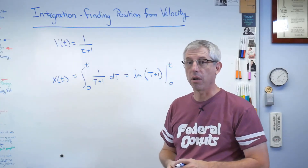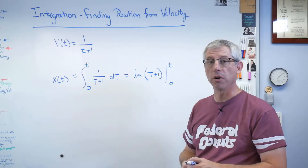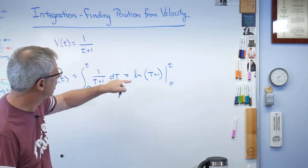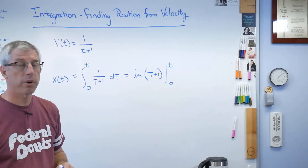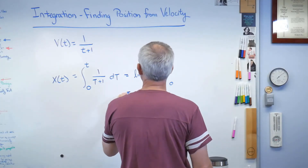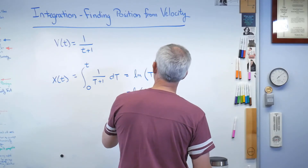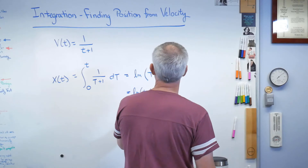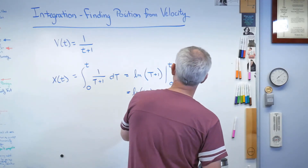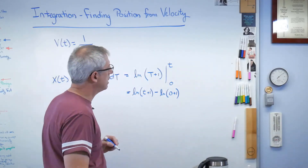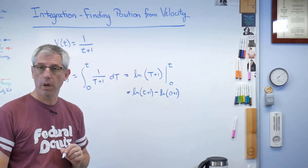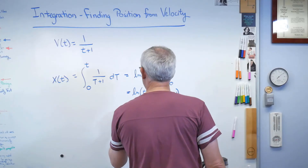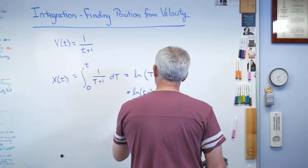That pretty much describes all of algebra, right? Just throw a letter in there where there's eventually going to be a number, and eventually we'll figure out what that number is. So let me get my head out of your way and apply those upper and lower limits. The upper limit gives us natural log of t plus 1, minus the natural log of 0 plus 1. What's the natural log of 1? It's 0 — because e to the 0 is 1. So that goes to 0, and what we get is natural log of t plus 1.